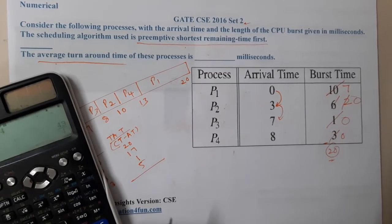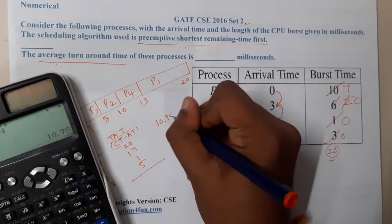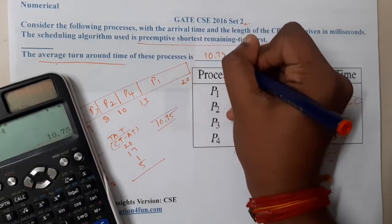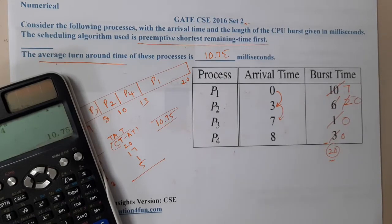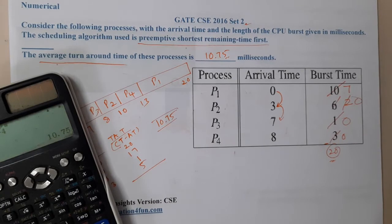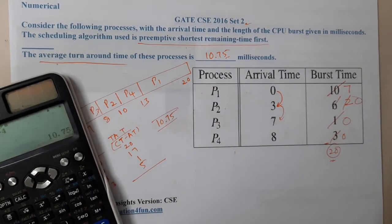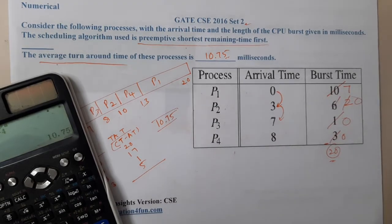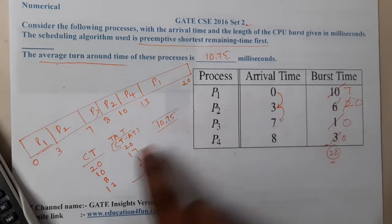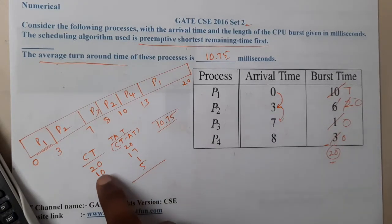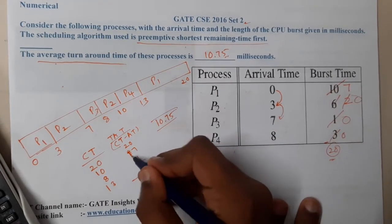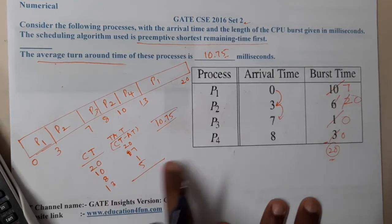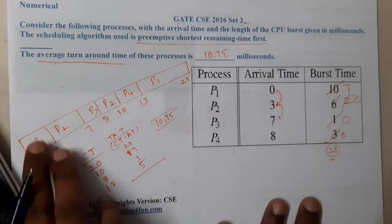Dividing by 4 gives 10.75, but that answer isn't matching. Let me check for a silly mistake. Looking again at the turnaround times: P1 = 20 − 0 = 20, P2 = 10 − 3 = 7 (not 17 — my bad!), P3 = 8 − 7 = 1, P4 = 13 − 8 = 5. Sorry for that error.